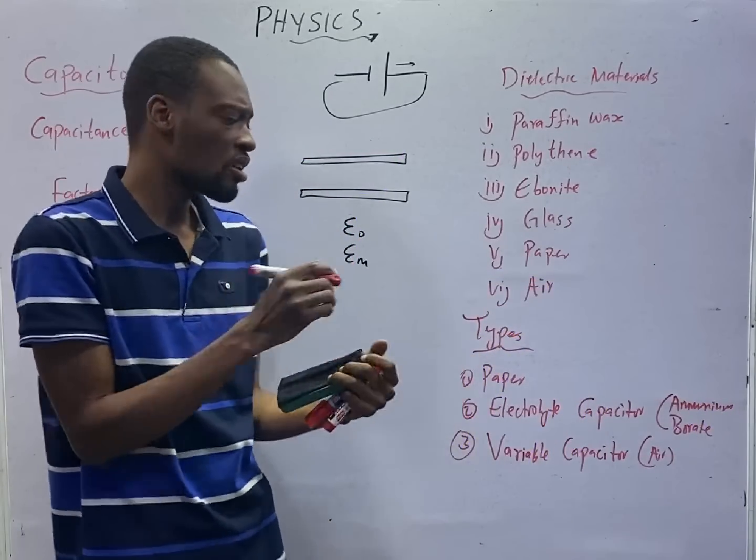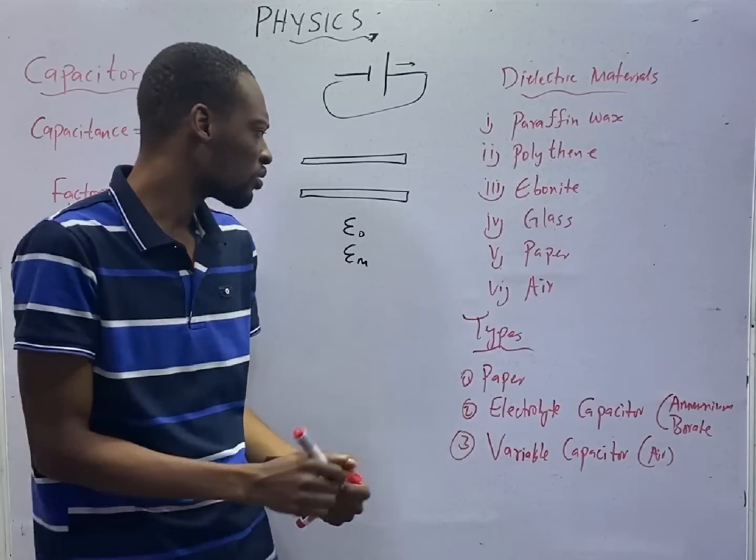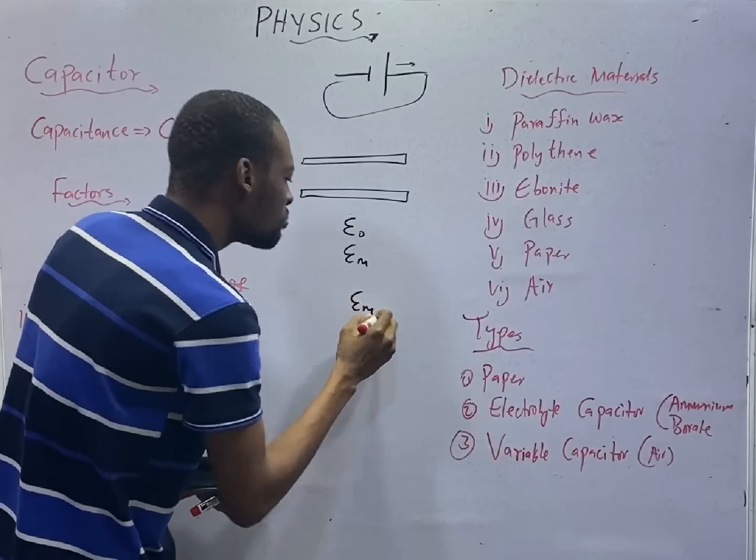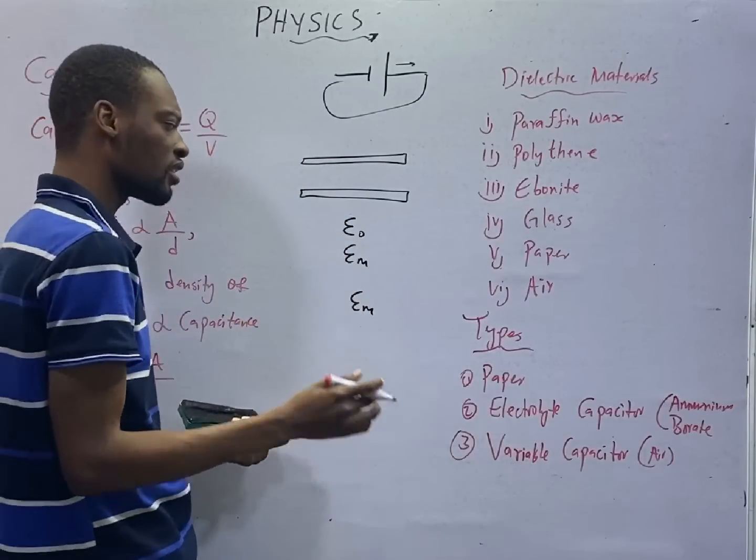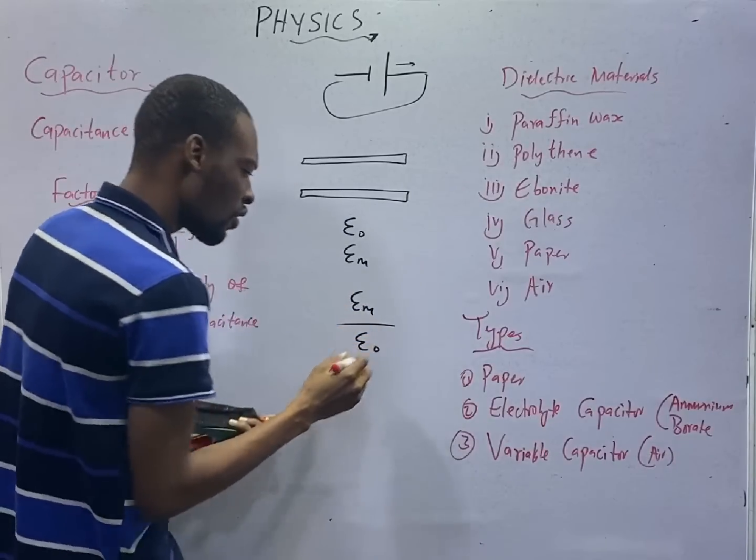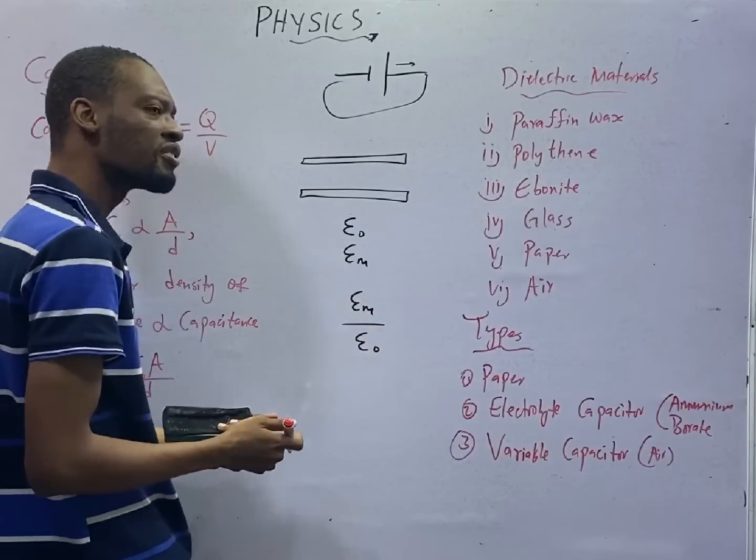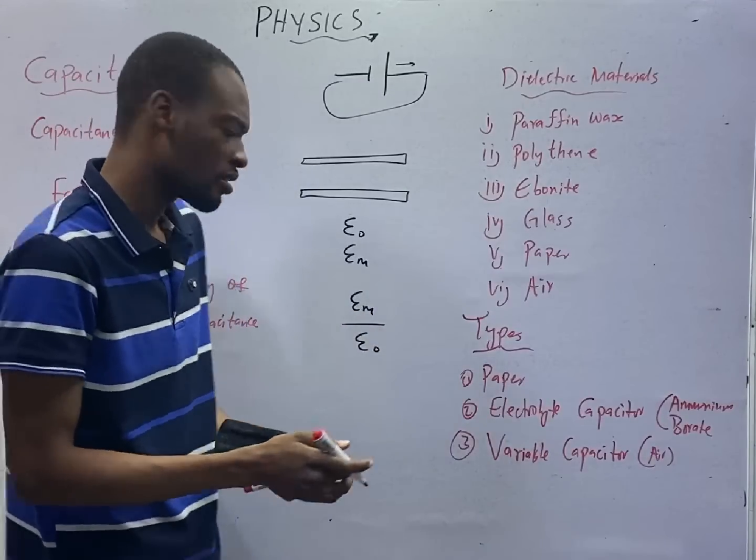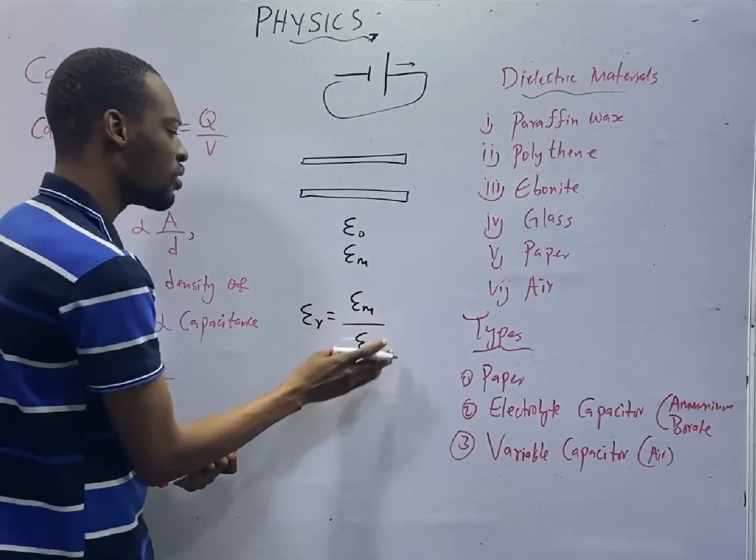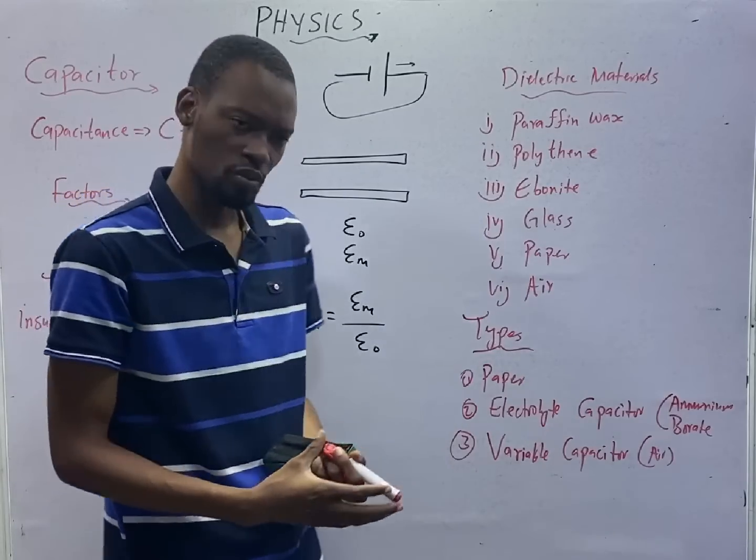Dielectric constant is also referred to as permittivity. Now, if you are looking at the permittivity in a medium, which is not vacuum or air, over the permittivity in vacuum or air, this divided by this is referred to as relative permittivity. So you can say E_r is equals E_m over E naught. We shall come to this soon.